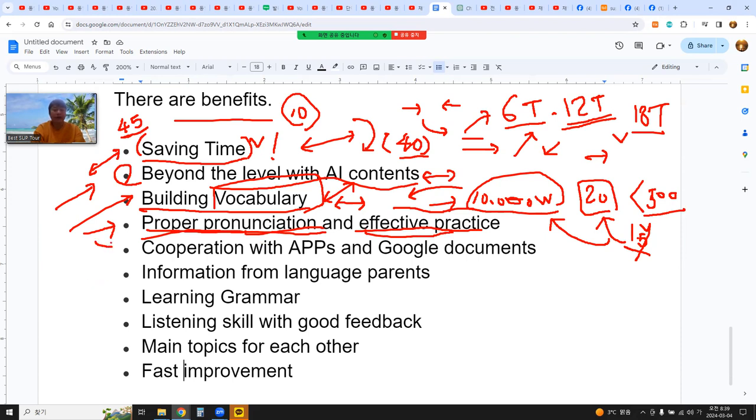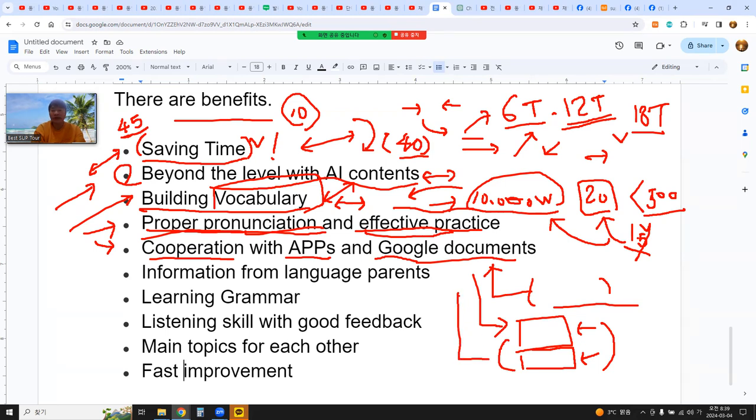And also the online language exchange cooperation is possible with apps. I use Zoom and Google documents. With Google documents, you can share Google documents with your language parents. And then by doing that, good interface. Both of the learners use a laptop and they can write together. They can cooperate, make content half and half together and then study together, teach together. And then there are very effective ways. So cooperation is possible with AI or apps and high technology.